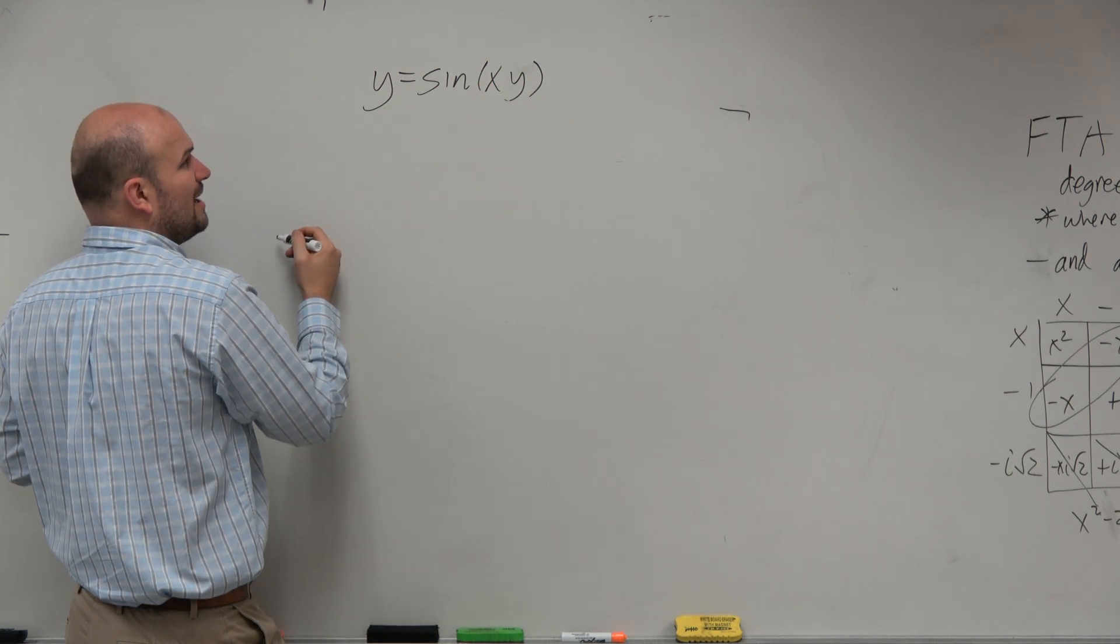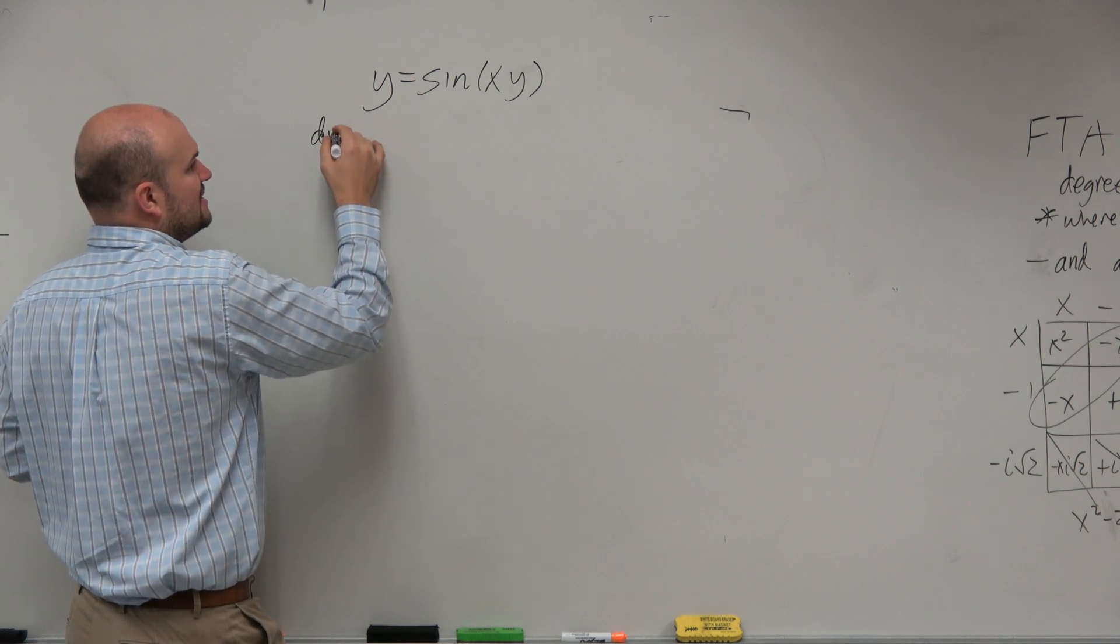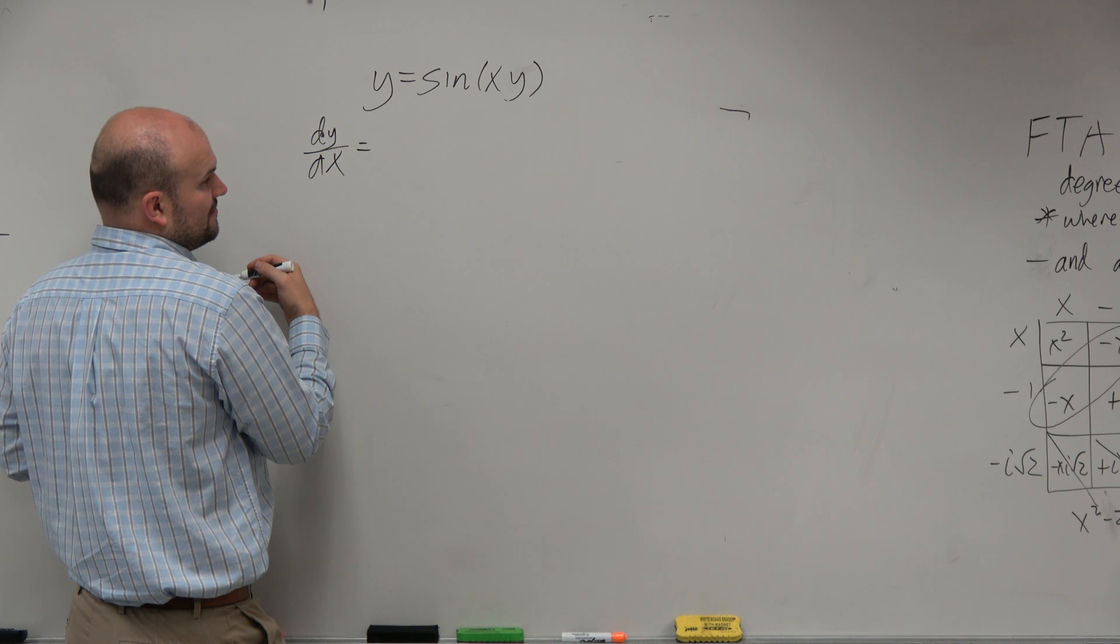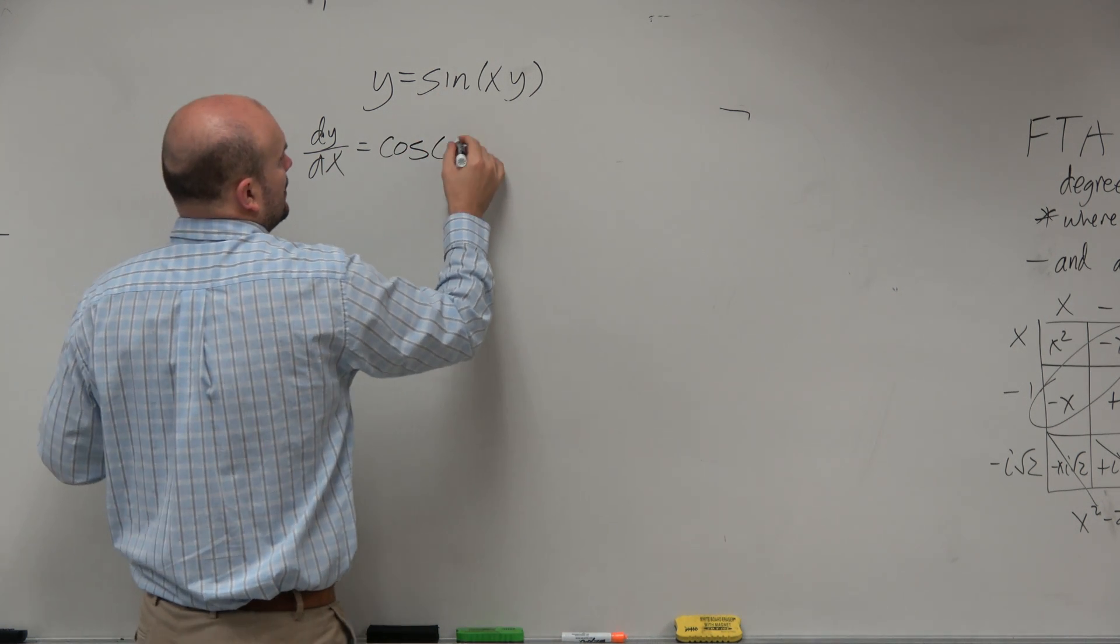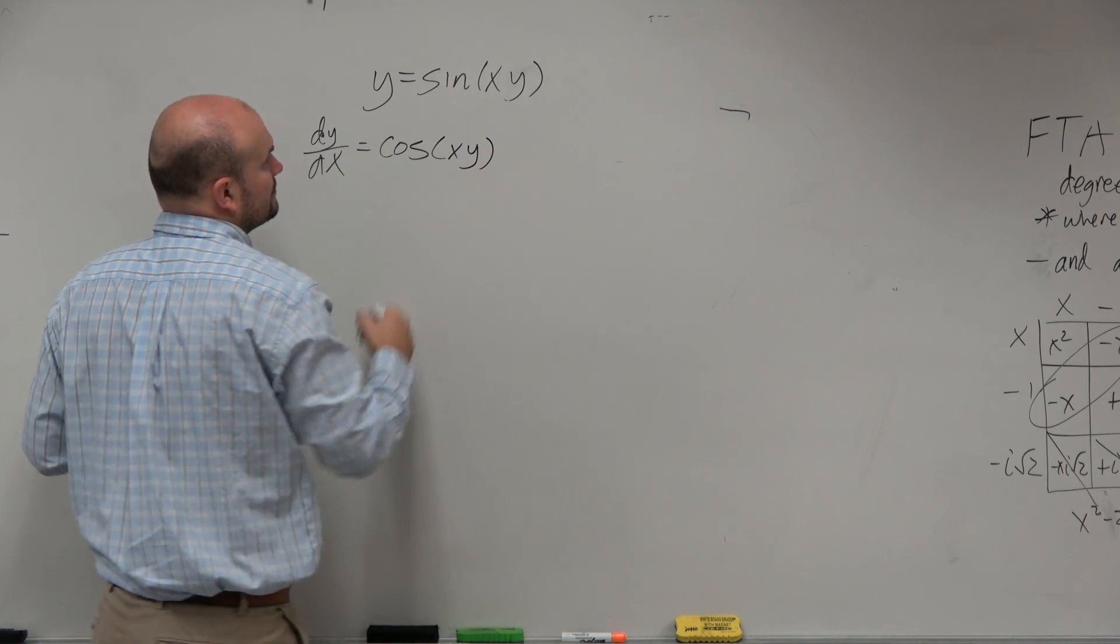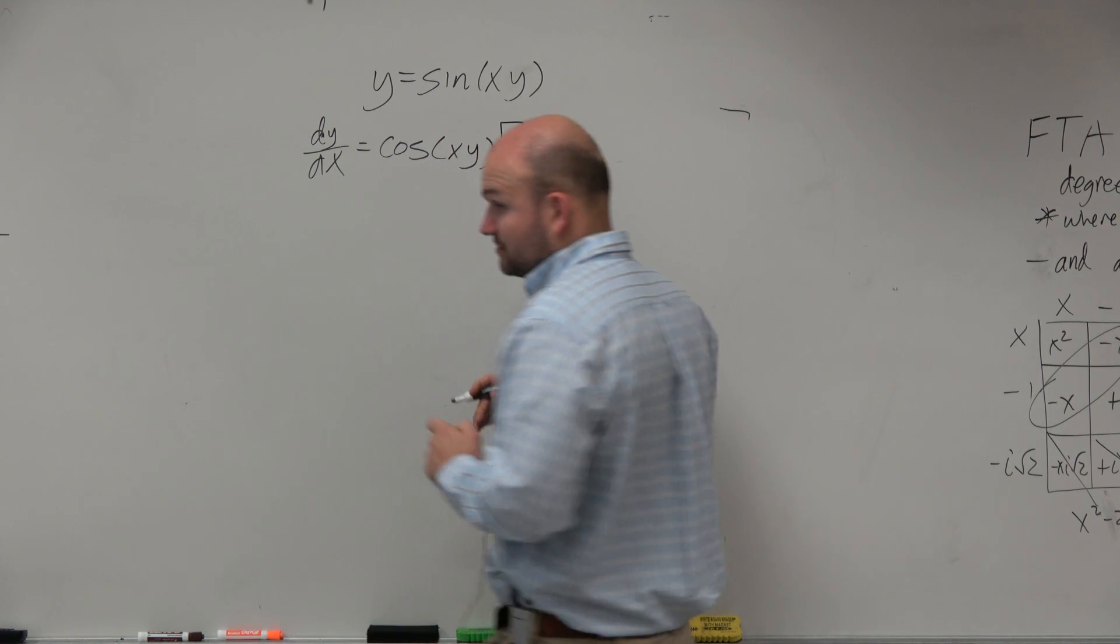So I can't solve for y in this case, but if I differentiate with respect to x, I get dy/dx equals cosine of xy, then times the derivative of xy, which is going to be the product rule.